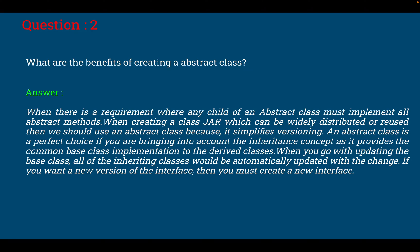When there is a requirement where any child of an abstract class must implement all abstract methods, then you should use abstract class. The second important point is when creating a class jar or a project which can be widely distributed or used, then we should use an abstract class because it simplifies versioning. An abstract class is a perfect choice if you are bringing into account the inheritance concept as it provides common base class implementation to the derived classes.